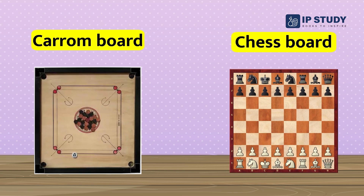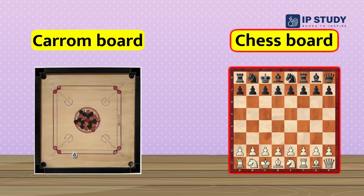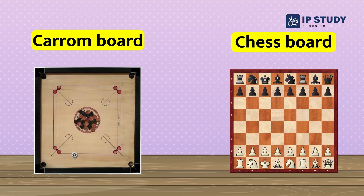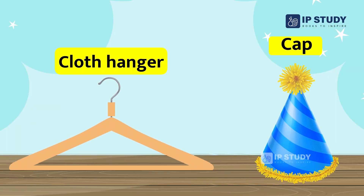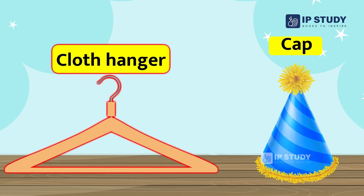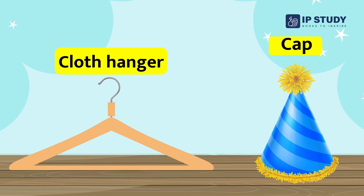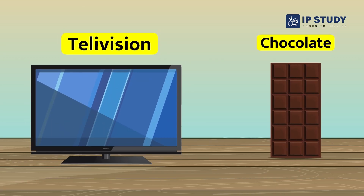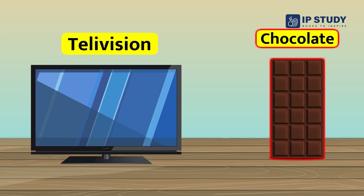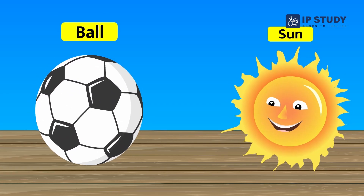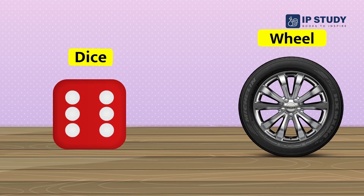Look at these squares: this is a carom board, while this is a chess board. Look at these triangles: this is a cloth hanger and this is a cap. Look at these rectangles: this is a television and this is a chocolate. Look at these circles: this is a ball and this is the Sun.